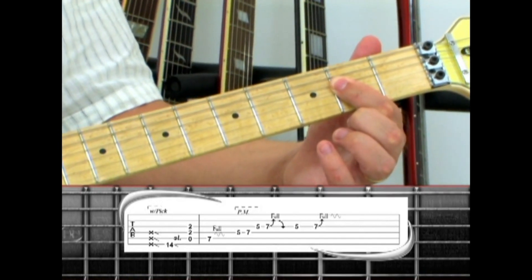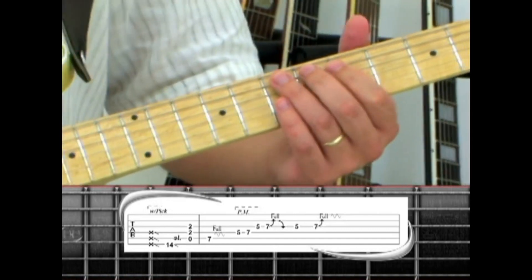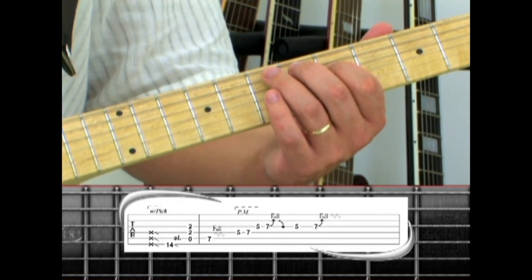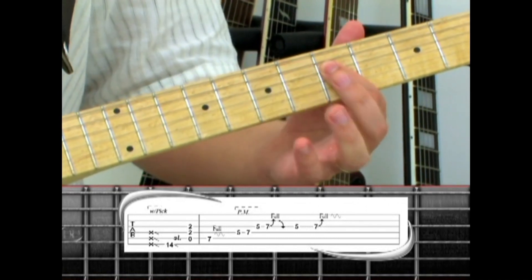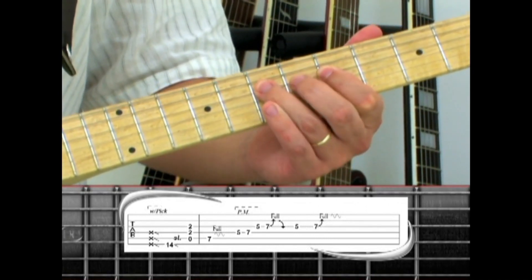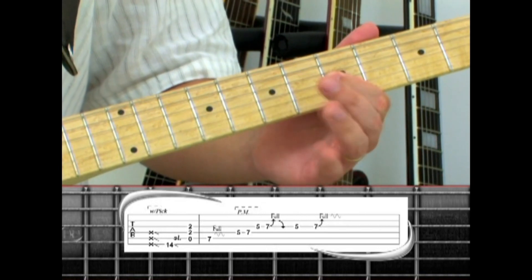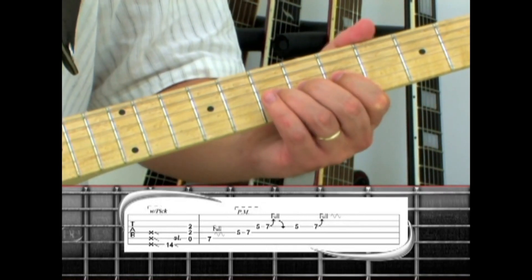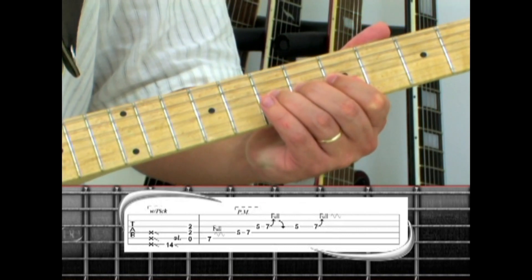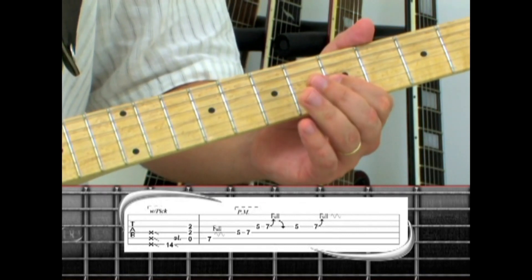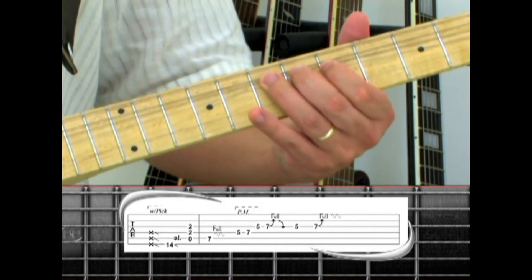Next, play the fifth string seven with the ring finger and very aggressive vibrato. Palm mute the fourth string five, seven, third string five, seven with artificial harmonics, bend and a release, five and seven with a bend and vibrato.